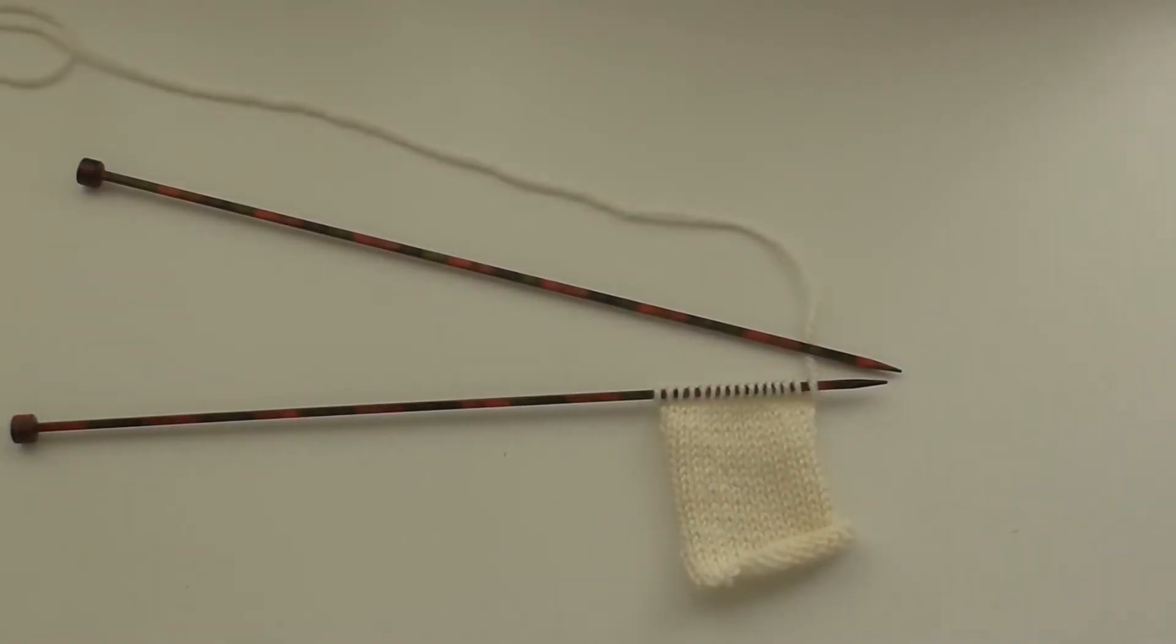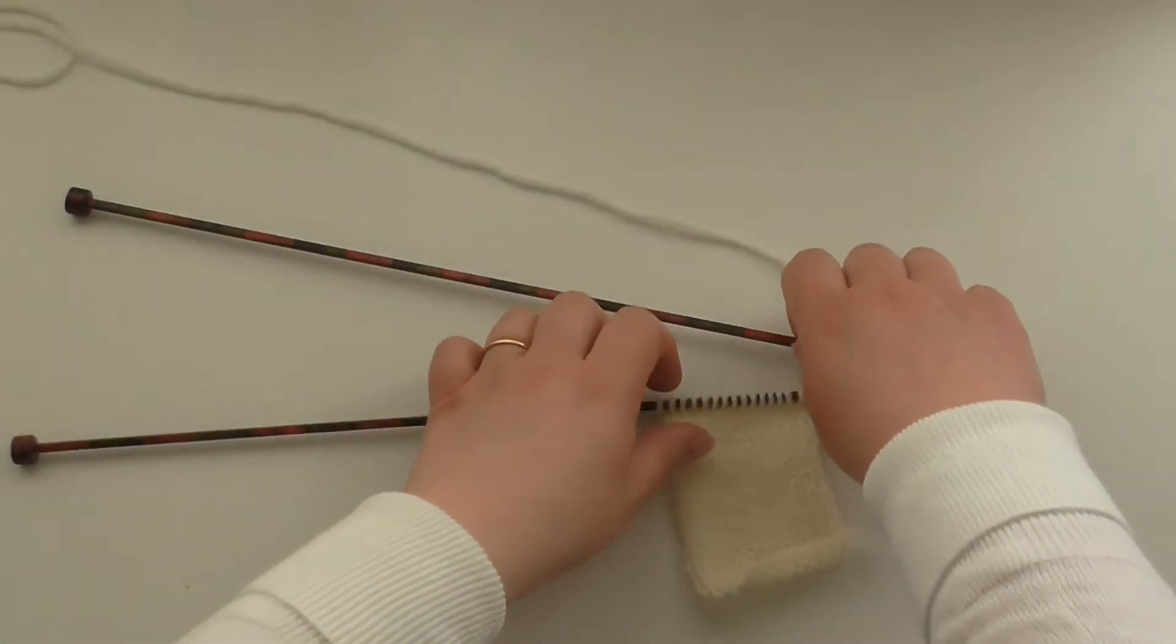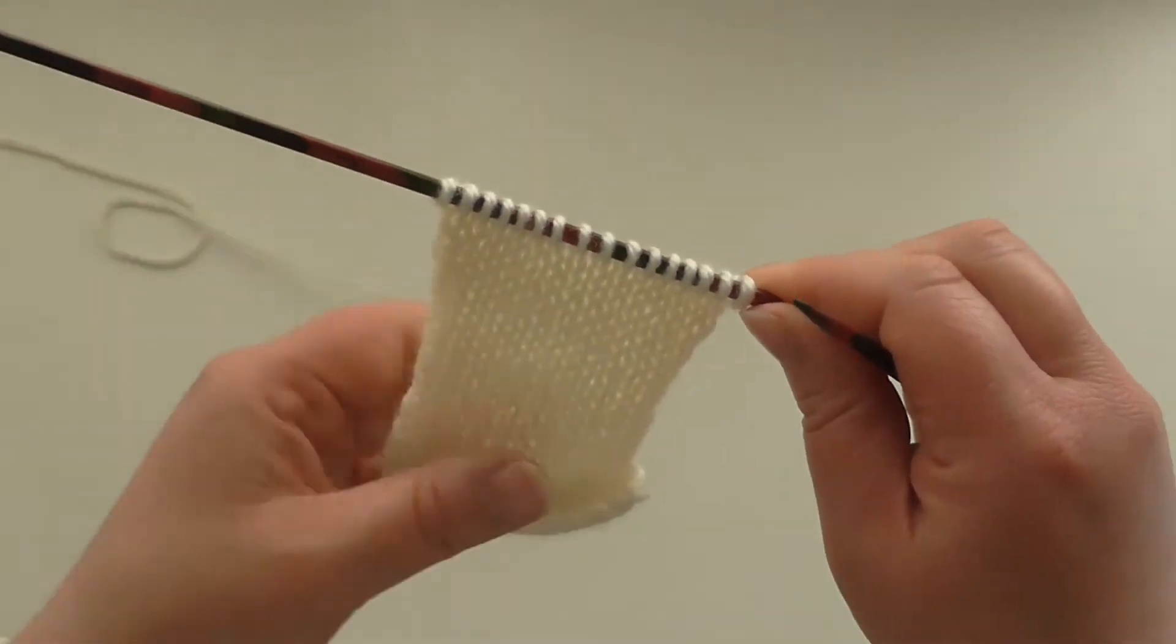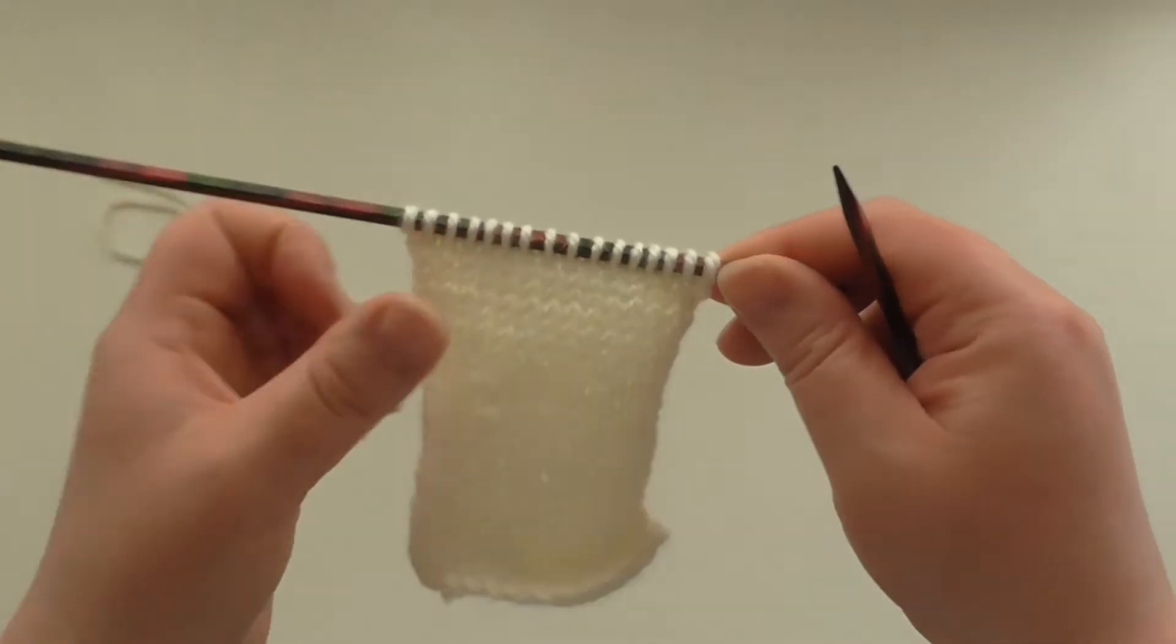Hi, welcome to Bobbins and Bows with Bear YouTube tutorial for a looser cast-off. Sometimes you could do a looser cast-off for things like hats and gloves, perhaps the ribs of the gloves. So I'll show you what to do.